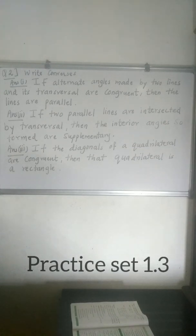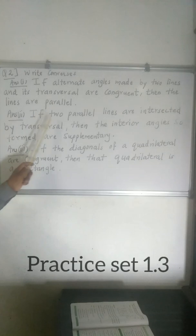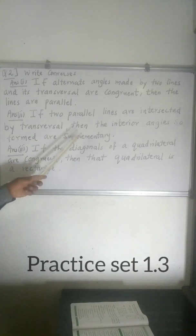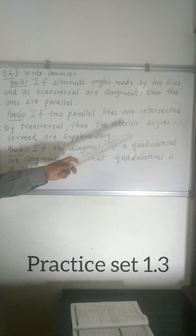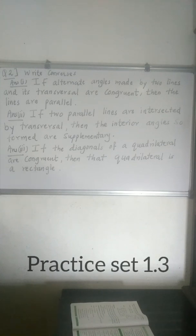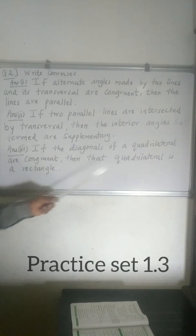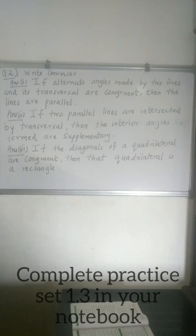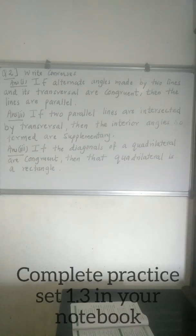The converse of the next statement is: If two parallel lines are intersected by a transversal, then the interior angles so formed are congruent. And the converse of the last statement is: If the diagonals are congruent, then that quadrilateral is a rectangle. Write down Exercise 1.3 in your notebook.